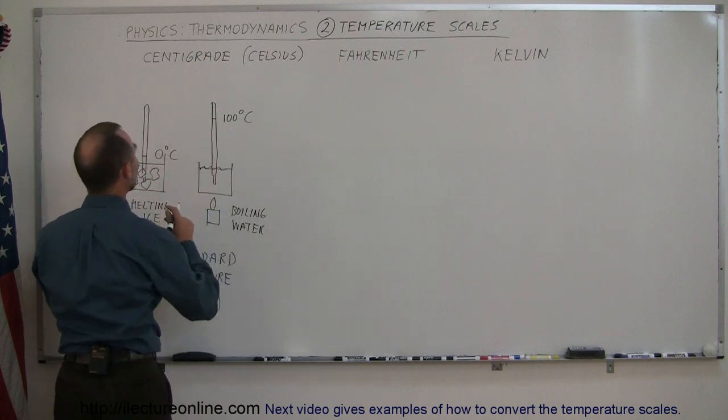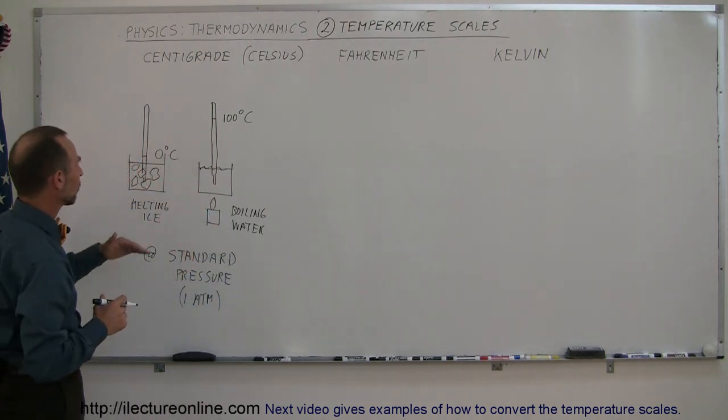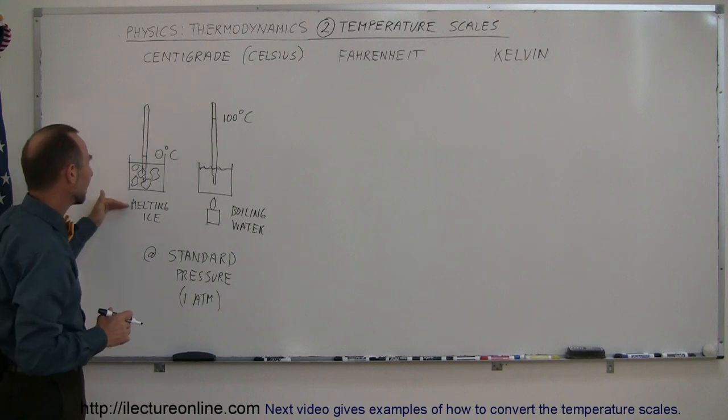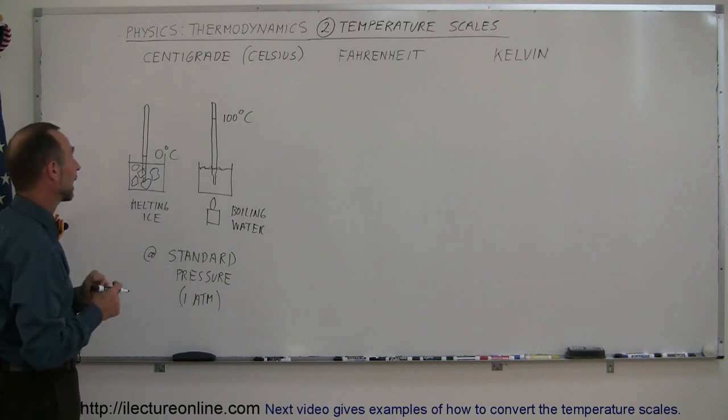And we'll find then, the difference in the temperature between boiling water and melting ice, or freezing water, however you want to look at it, is exactly 100 centigrade degrees.